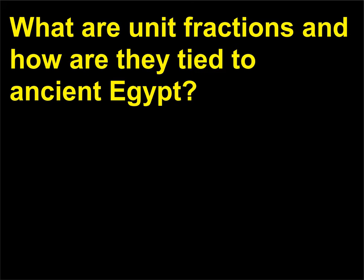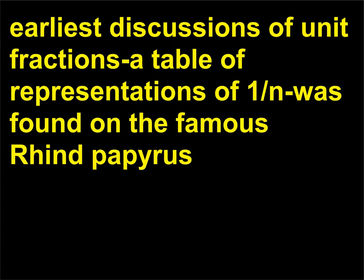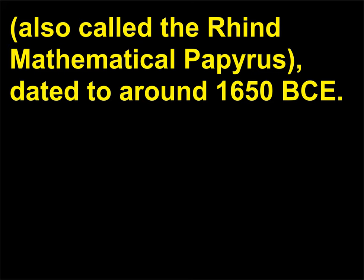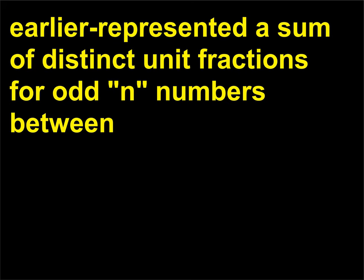What are unit fractions and how are they tied to ancient Egypt? A unit fraction is one that has a numerator of one, such as one-half, one-fourth, and so on. One of the earliest discussions of unit fractions — a table of representations of 1/n — was found on the famous Rhind papyrus, also called the Rhind mathematical papyrus, dated to around 1650 BCE. This record, a table copied by the Egyptians from another papyrus dated 200 years earlier, represented a sum of distinct unit fractions for odd-n numbers between 5 and 101.